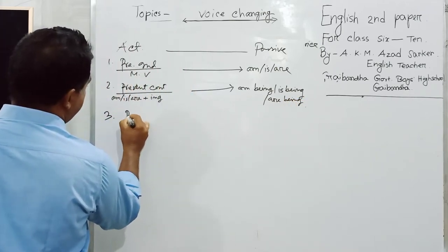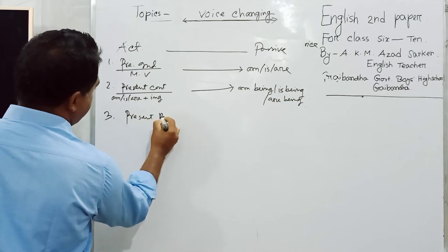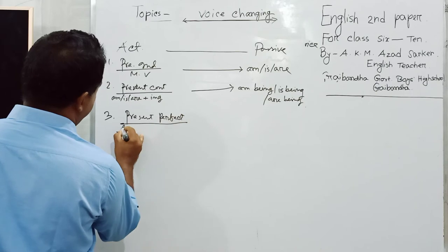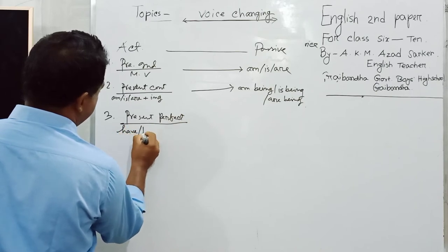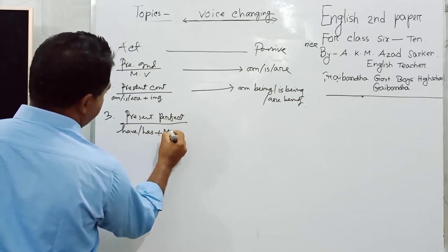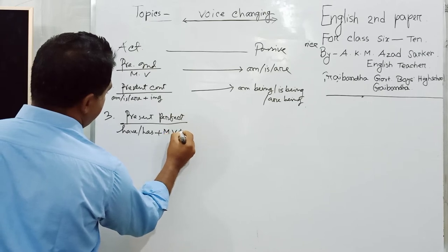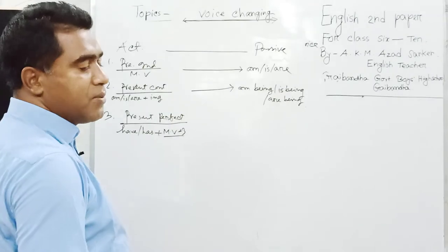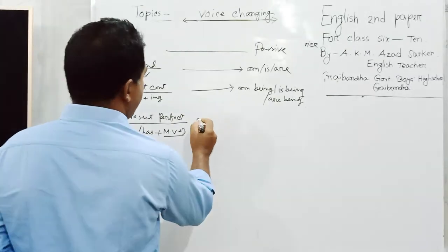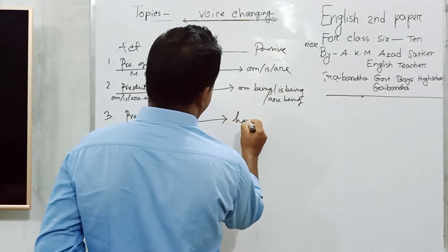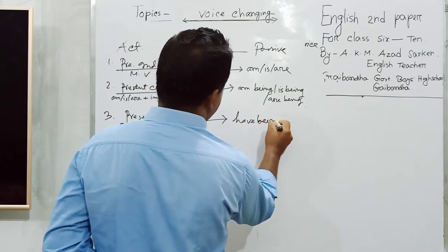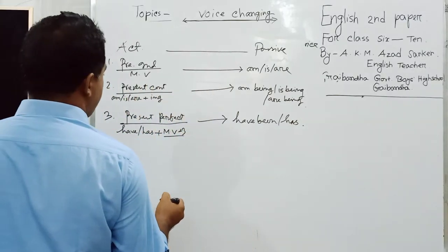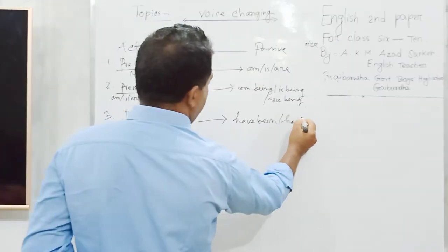Present perfect tense: have or has plus past participle form of main verb. Past participle means the third form of the verb. For passive, have been or has been.